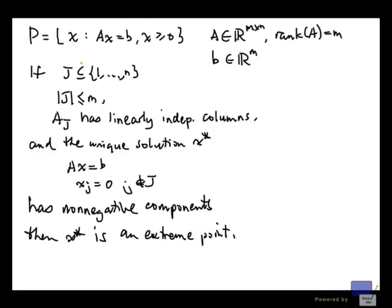So for every extreme point, you can always pick such a J. Now the thing is, we don't really have to go through all possible cardinalities less than equal to m. In fact, we can focus on subsets of indices that have cardinality exactly m, and the reason is as follows.